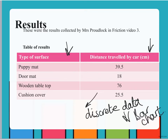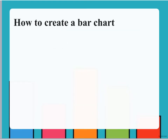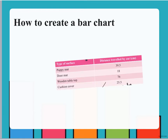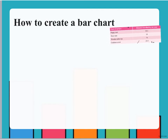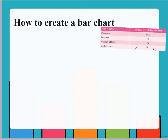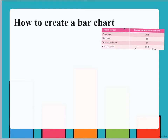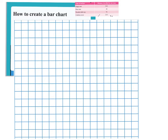I'm now going to model how you would create a bar chart, and I'm going to use Mrs. Proutlock's results to help me. I want you to think back to when we were in school drawing a bar chart together and think about the first thing that you need to do. The first thing you need to do is draw the lines for your actual graph. These are called an x axis and a y axis. I'm going to draw them here on my piece of paper.